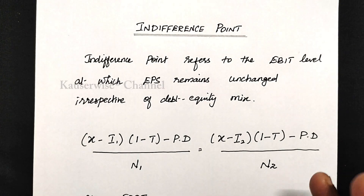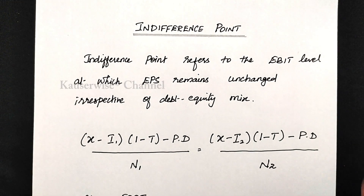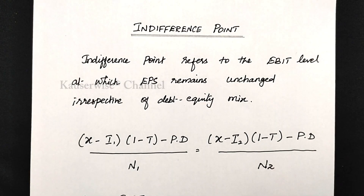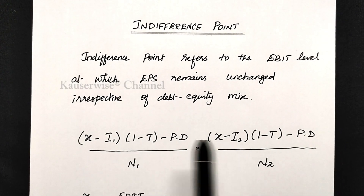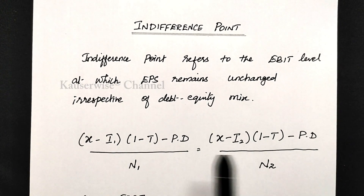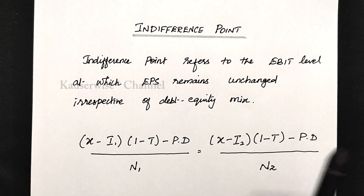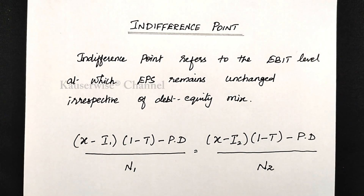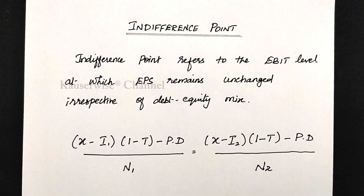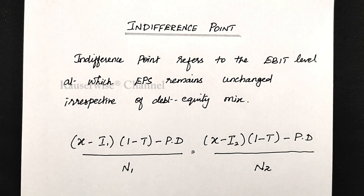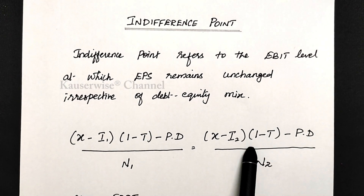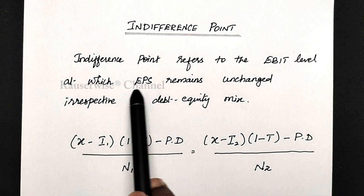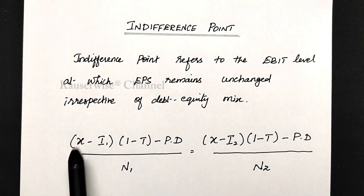For that we have one equation. With the help of this equation, we are going to find out EBIT — at what level of EBIT the EPS is going to remain same for 2 different alternatives. If we have more than 2 alternatives, suppose 3 alternatives, first we can compare alternative 1 and alternative 2, and then compare alternative 1 with alternative 3. Maximum you can compare 2 different alternatives at a time.